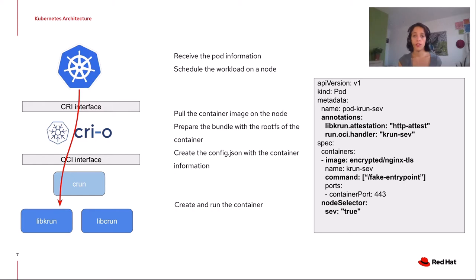In the container section, you can see the image — this is a special form of image, which we'll see in more detail. We also have to specify a command. However, Kubernetes and the container engine run in an untrusted environment, so we don't want to provide them information about the process we're going to run. That's the reason for the fake entry point. The last field is the node selector — we have to inform Kubernetes that we want to schedule the workload on a node that is SEV-capable, and that's the reason for the label.